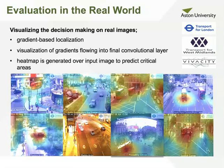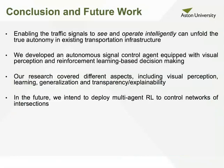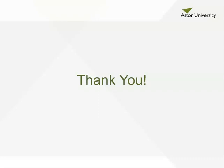Currently, we are having discussions with the local transportation authorities in the UK to perform a trial of our signal control method on real intersections using existing camera infrastructure. We developed an end-to-end trainable signal control agent, and we believe that enabling signals to see and intelligently act can unfold the true autonomy in transportation infrastructure. In the future, we intend to extend our signal control method to a network of simultaneously operating intersections. Thank you for watching.